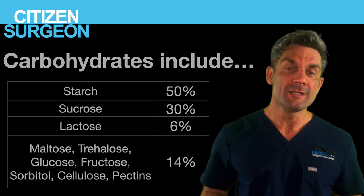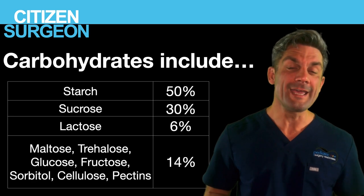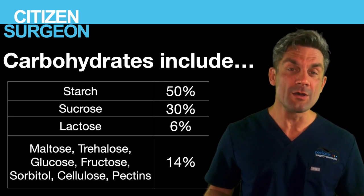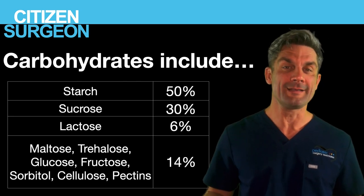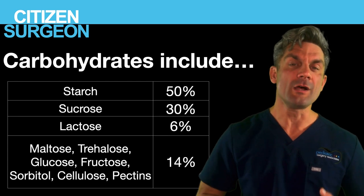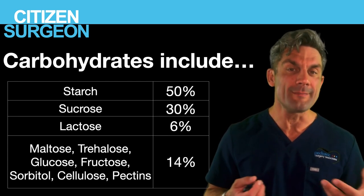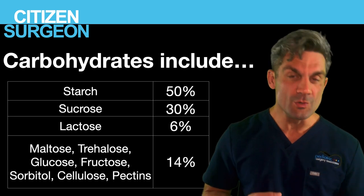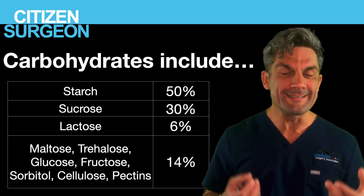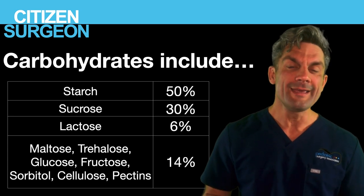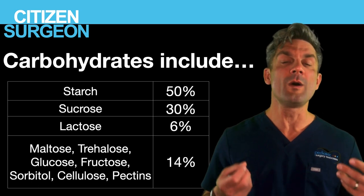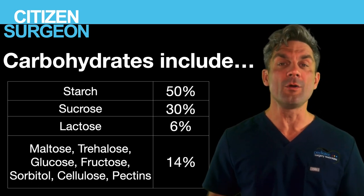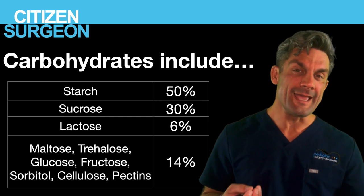Beyond starch, we take in a lot of sugar: sucrose, lactose, maltose, glucose, fructose, sorbitol, and even cellulose, which we can't digest. All these starches and sugars begin digestion in the mouth — by chewing and with amylase — then go to the stomach, which breaks them into particle sizes less than one millimeter. They exit through the pylorus and enter the duodenum.